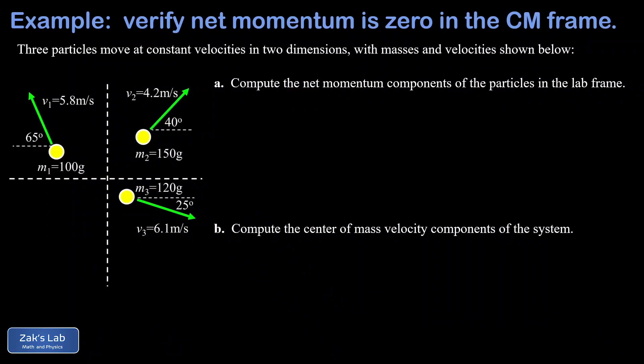In this video, we're tackling a pretty heavy concept question on the center of mass reference frame. The main point here isn't to solve a collision problem. The point is to really deepen your understanding of the properties of the center of mass frame. So we're using this theorem of mechanics that says the net momentum of a system is equal to the total mass of the system multiplied by the center of mass velocity. This means we can get the center of mass velocity by computing the net momentum of the system, and this allows us to use our relative velocity formulas to transform all the velocities into the center of mass frame.